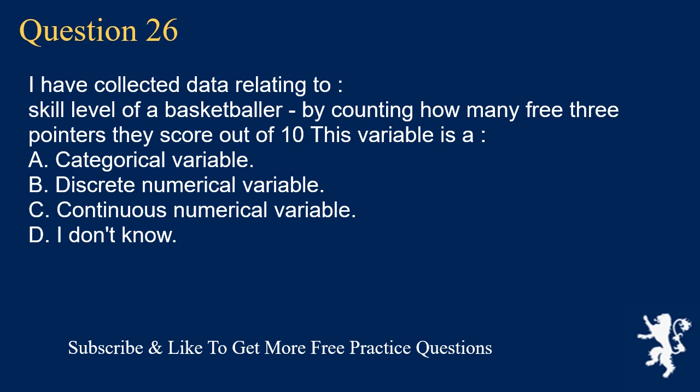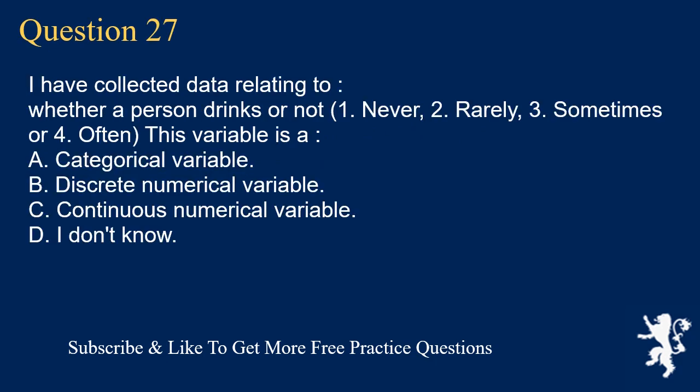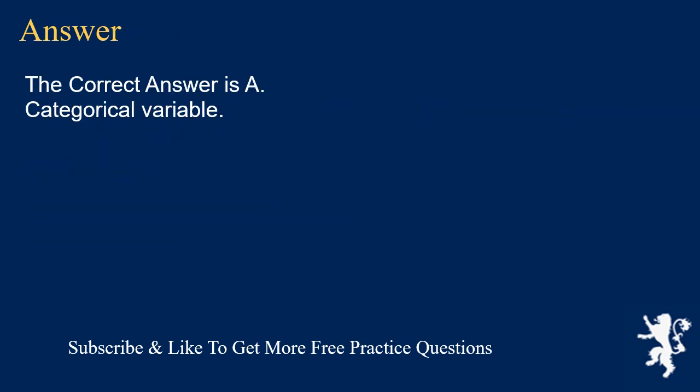Question 27: I have collected data relating to whether a person drinks or not: 1. Never, 2. Rarely, 3. Sometimes, 4. Often. This variable is A. a categorical variable, B. discrete numerical variable, C. continuous numerical variable, D. I don't know. The correct answer is A, categorical variable.